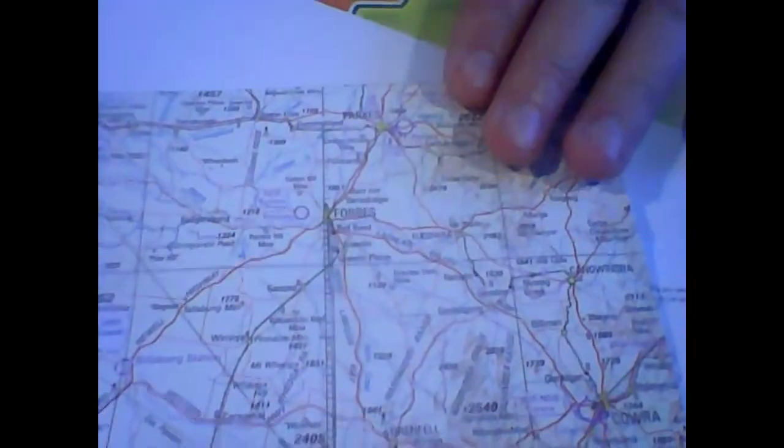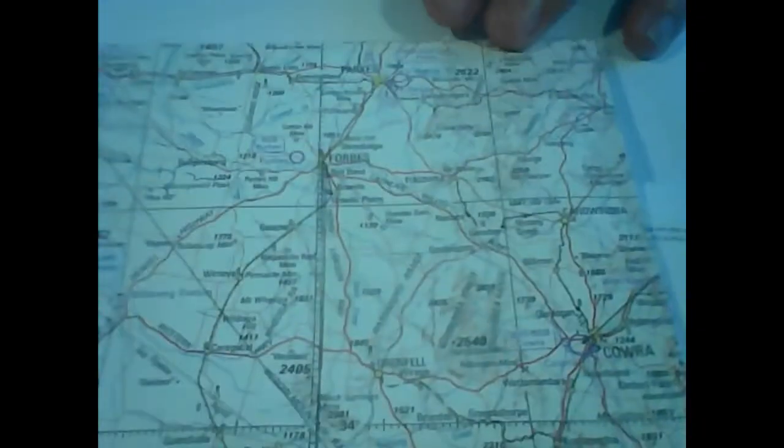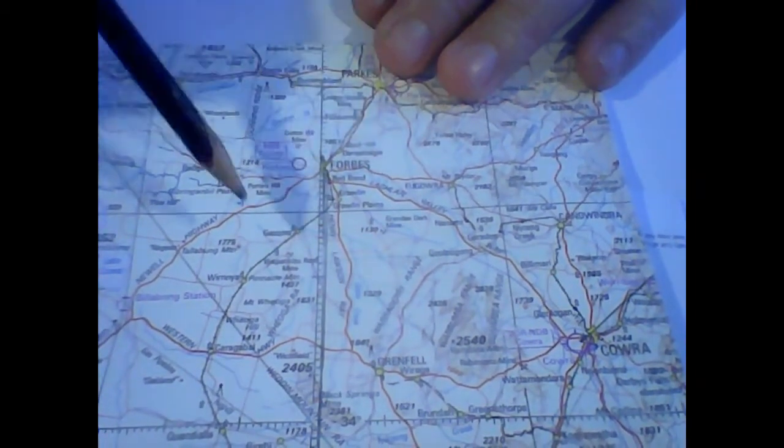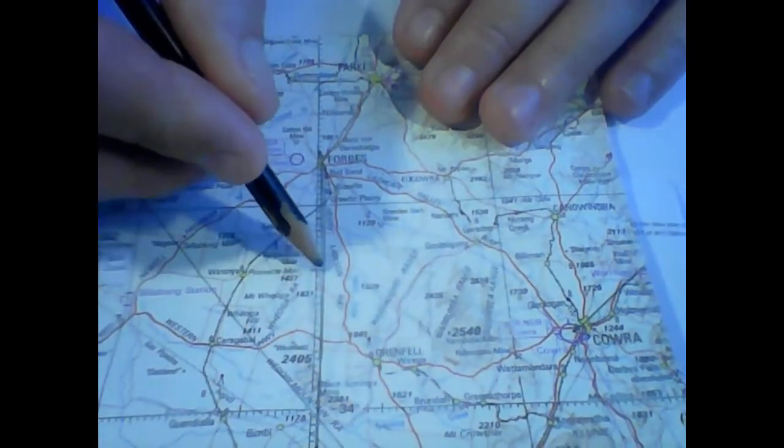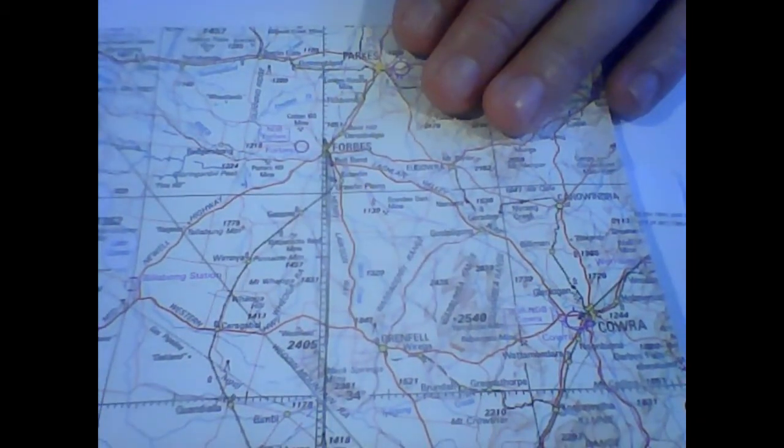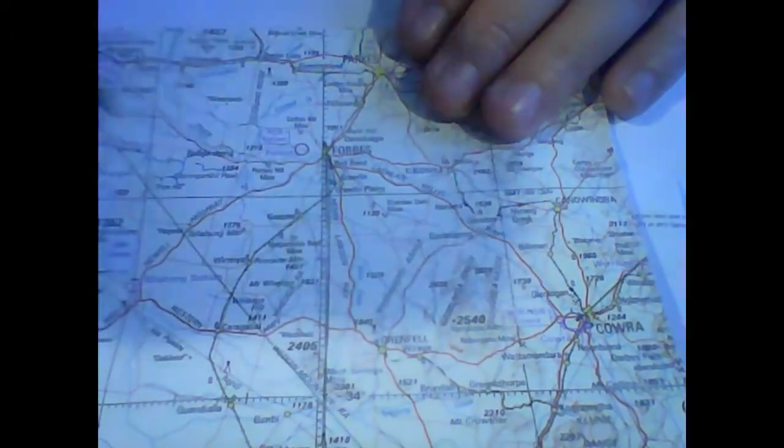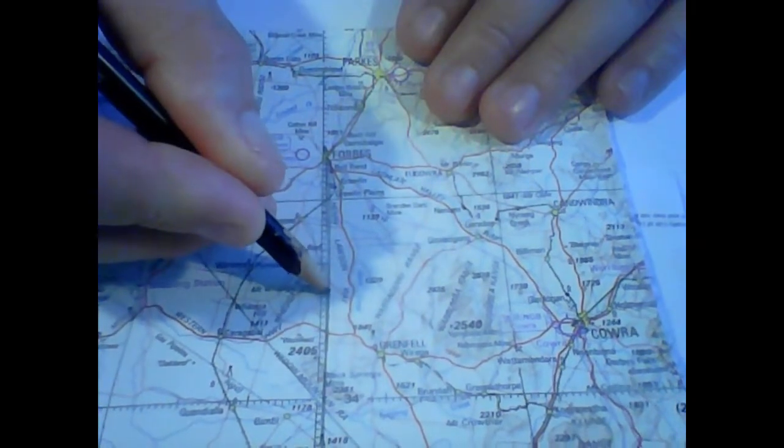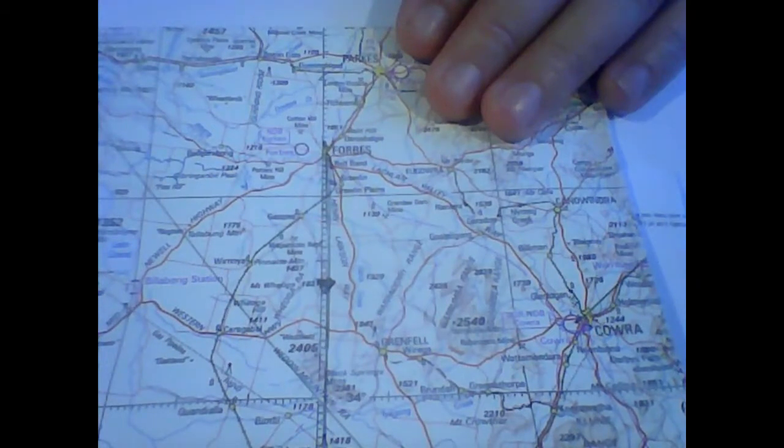So what you want to do is we're going to, in this particular example, we're going to fly from Cootamundra in the south here and we're going to fly basically due north to Forbes Township. Forget about the airport for the moment, just to make it easy. Now, let's say late in the flight, which often instructors do this to you, they give you a diversion. So the first thing I do is I put a big obvious mark on the map so I know where I am when they told me.